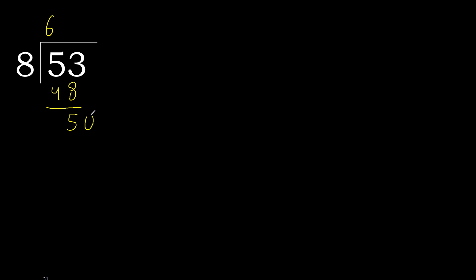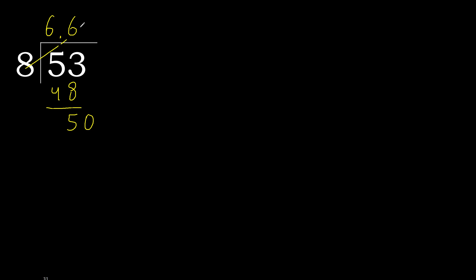There is no next number, therefore complete with 0 here with a decimal point. Complete point. 50: 8 multiplied by 7 is greater. Multiplied by 6 is 48, which is not greater. Subtract: 50 minus 48 is 2.